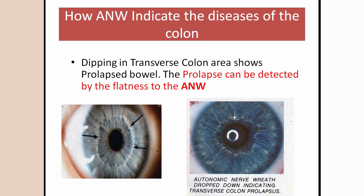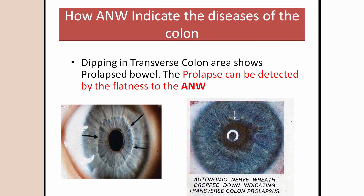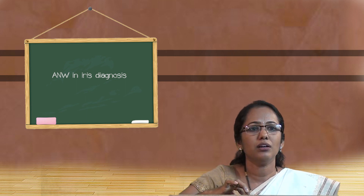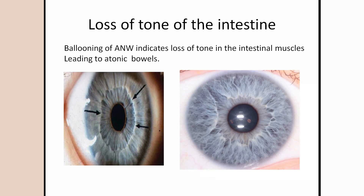You can compare the normal iris with the prolapsed colon iris. The first picture shows the normal shape of the autonomic nerve wreath, and in the second picture you can see how the top part of the wreath has come down towards the pupil. This dipping of the autonomic nerve wreath at the superior region shows a prolapse of the colon. For spastic colon in the iris, the usual position of the autonomic nerve wreath is one third away from the pupillary border, but in spasticity it comes very close to the pupillary border, indicating spastic constipation.